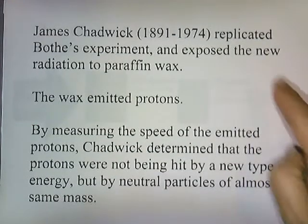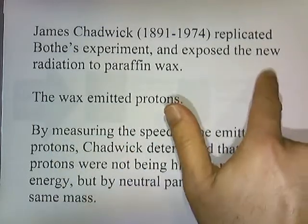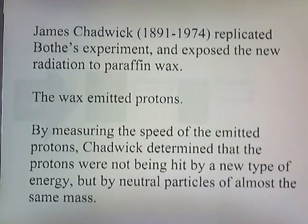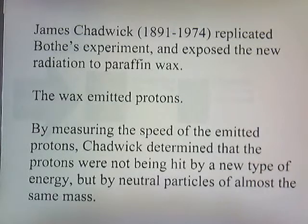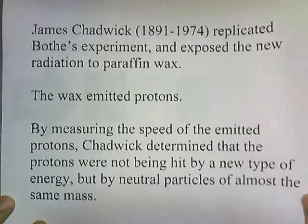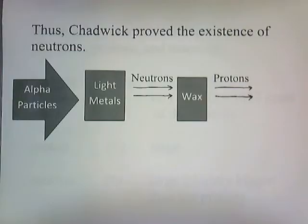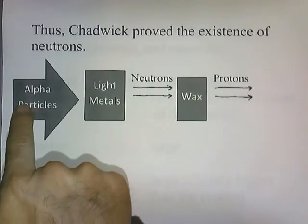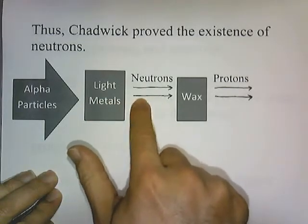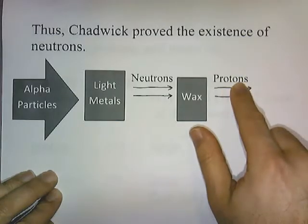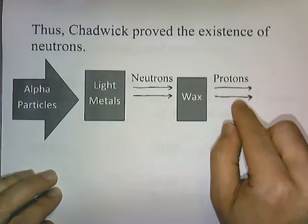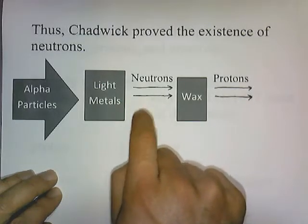James Chadwick replicated Bothe's experiment and then exposed this new radiation to paraffin wax, which was known to contain a lot of hydrogen. When the paraffin wax was exposed to this new radiation, the wax started emitting protons. By measuring the speed of the emitted protons, Chadwick determined that the protons were not being struck by some new mysterious type of energy, but by neutral particles of almost the same mass as a proton. Thus Chadwick proved the existence of neutrons — the metal gave off not mysterious energy but neutrons, the neutrons hit the wax, and the wax gave off protons.